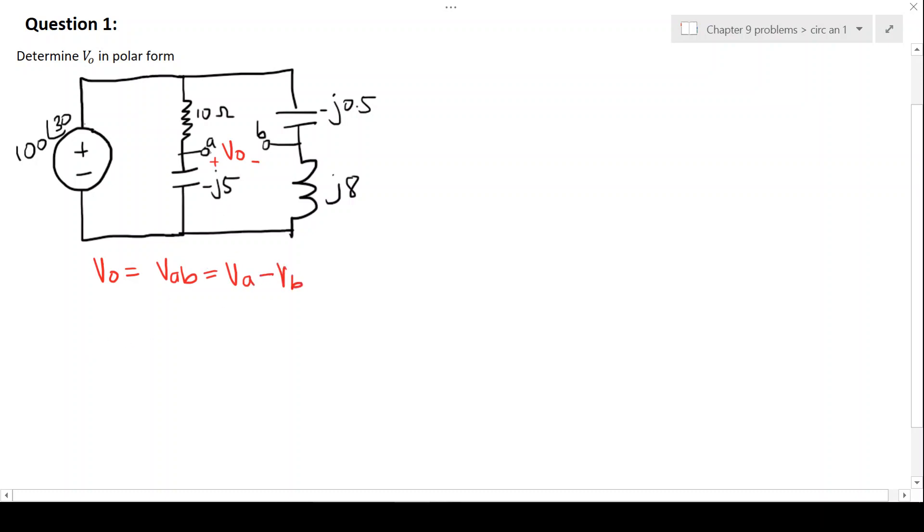So we need to find VA, VB and then subtract them from each other. Now we can see that the voltage at this point must be the 100 angle 30 degrees voltage connected to the voltage source and that voltage drops over the 10 and minus J5 and drops over the minus J5 and J8.